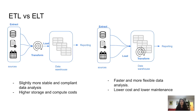ETL takes longer to implement because you transform data first, but it results in more stable and compliant, clean data. ELT, on the other hand, is faster and more flexible because the data is already loaded. It takes advantage of cloud data warehousing lowering the cost of storage and compute, so we can afford to load all our data and then transform it within the same data warehouse.